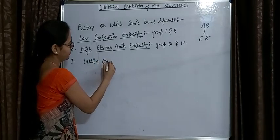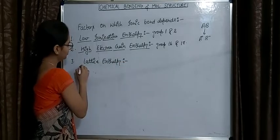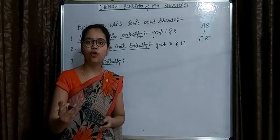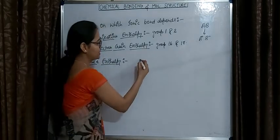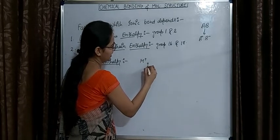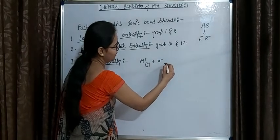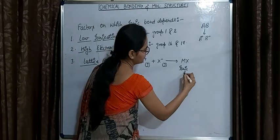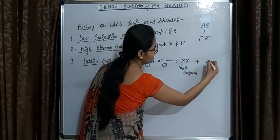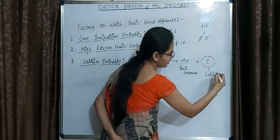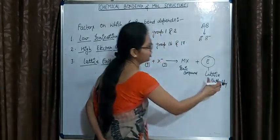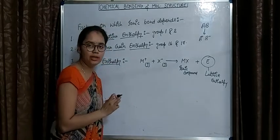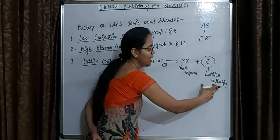The third factor is lattice enthalpy. Lattice enthalpy is the energy evolved in the formation of an ionic compound. You can see this by the equation: suppose M is the cation in the gaseous state and X is the anion also in the gaseous state, and they combine together to form MX, an ionic compound. The energy evolved in this process is known as lattice enthalpy.